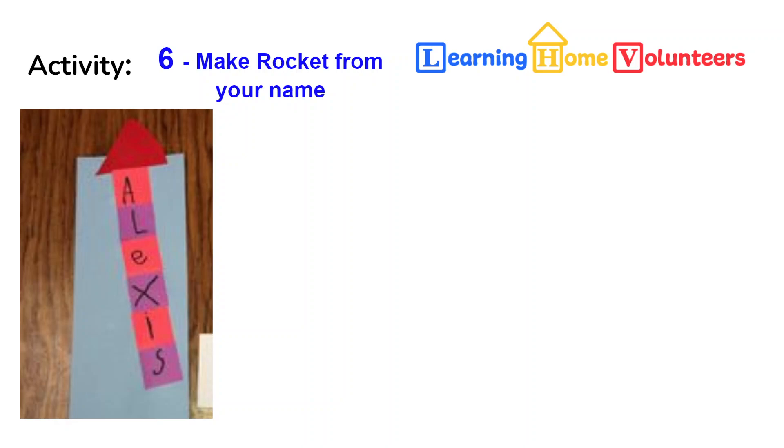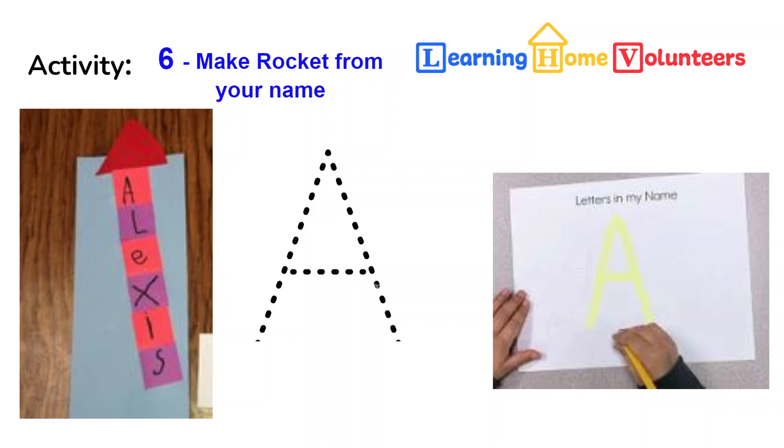To help your child get the right shape for the letter, you can do a couple of things. You can either use a dot outline of the letter like we see here, or you can use a highlighter like we see here and have the child actually write inside the highlighter. Either way, you're going to end up with the letters of your child's name, which you can glue together on a piece of paper. And voila, you have a rocket.